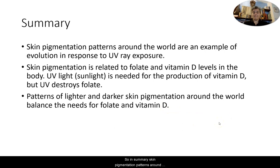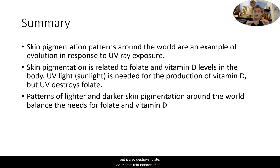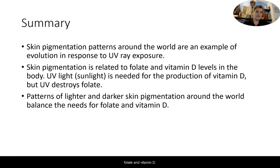In summary, skin pigmentation patterns around the world are an example of evolution in response to UV ray exposure over time. Skin pigmentation is related to folate and vitamin D levels in the body. Sunlight is needed for the production of vitamin D, but it also destroys folate — so there's a balance. Patterns of lighter and darker skin pigmentation around the world reflect that balance between folate and vitamin D needs.